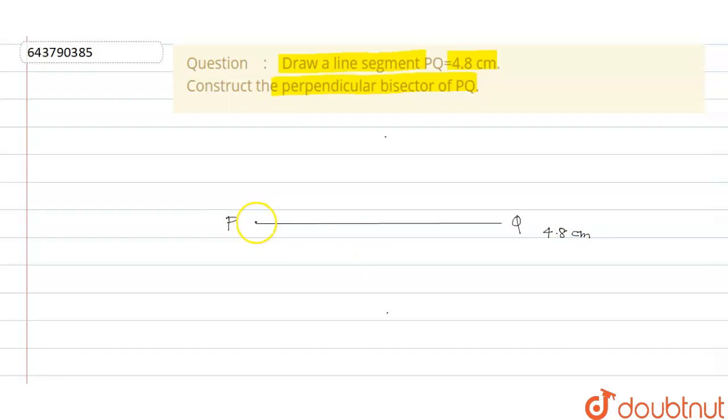That is this and this. Now the third step: with Q as a center and the same radius as taken in step two, draw an arc on both sides of PQ.